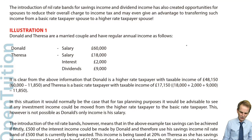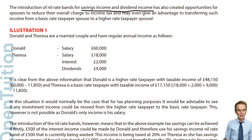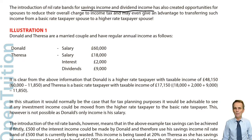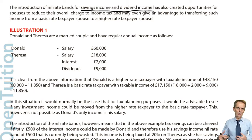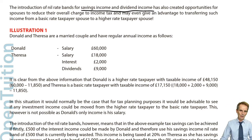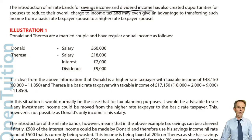As we've said, the introduction of nil rate bands for savings income and dividend income has now created opportunities for further tax saving, though with these examples it's not a very significant saving — not thousands or several hundred, but just a few hundred. Every little helps, and although it may not be a huge amount, it's the principles that concern us when it comes to examination questions. As the examiners have written themselves about these issues, it's important we take that on board.